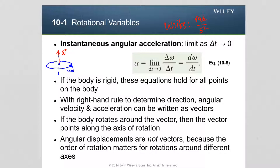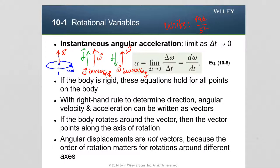The direction of the angular acceleration vector is determined by how the angular velocity changes. If the angular velocity vector increases with time — the object is speeding up — the angular acceleration is in the same direction as the angular velocity. If the angular velocity is decreasing in magnitude, the angular acceleration is opposite to the angular velocity, so the angular velocity vector decreases in magnitude.